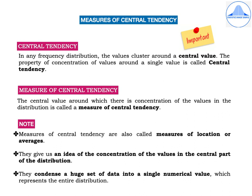The second point, the measures of central tendency they give us an idea of the concentration of values in the central part of the distribution. Thirdly, they condense a huge set of data into a single numerical value which represents the entire distribution.